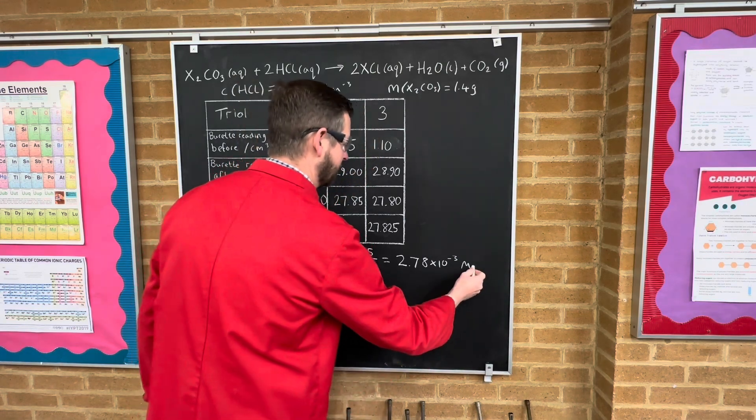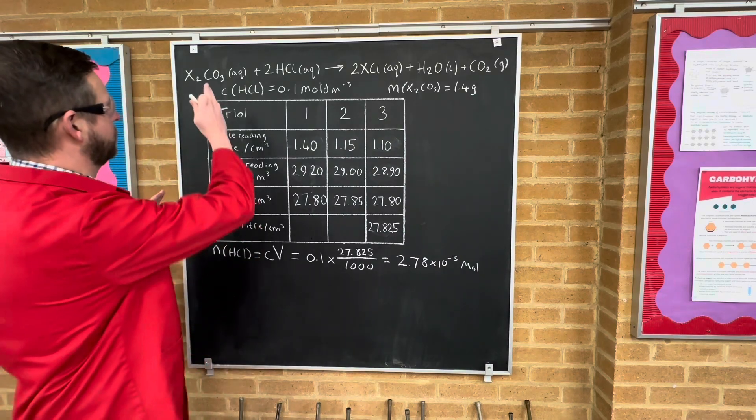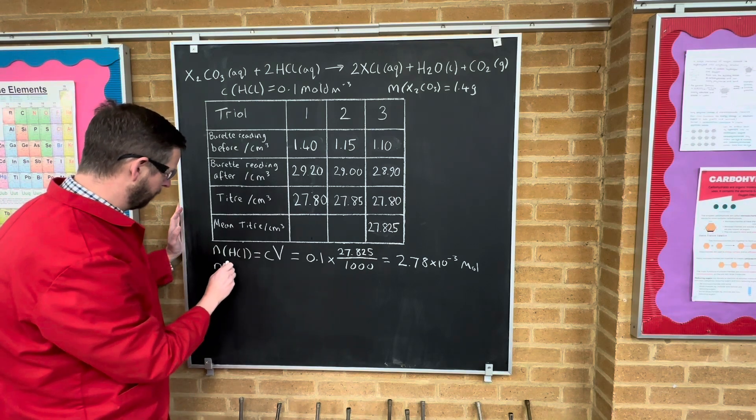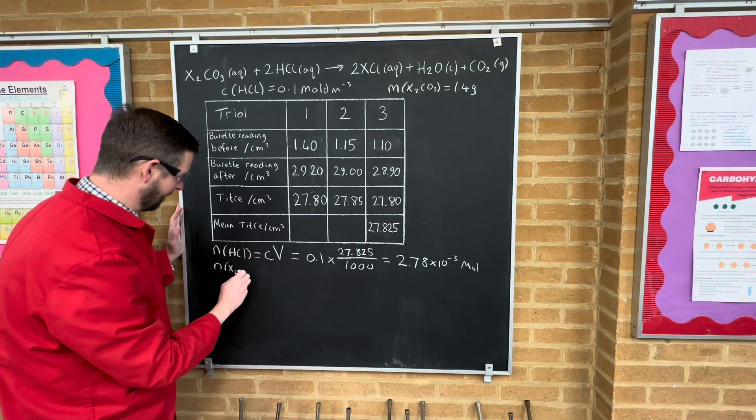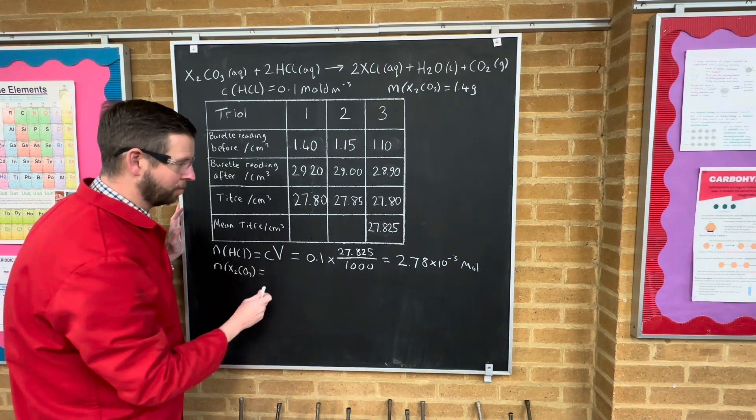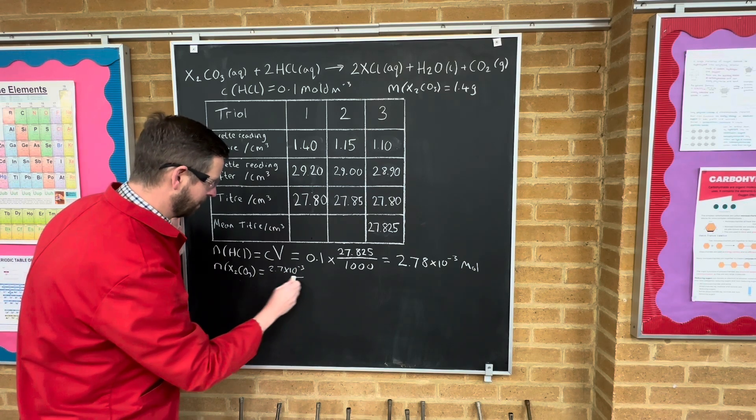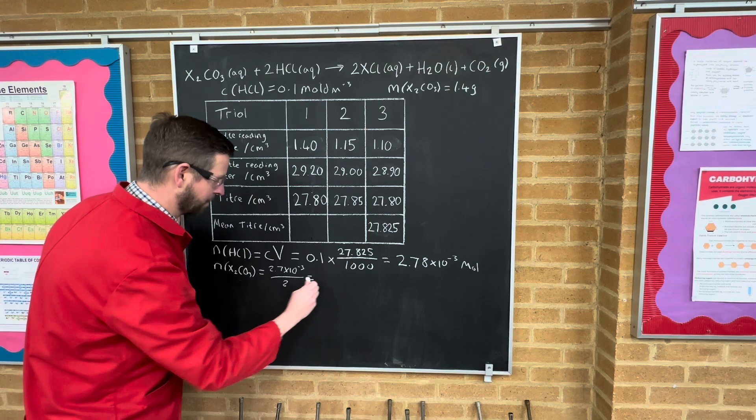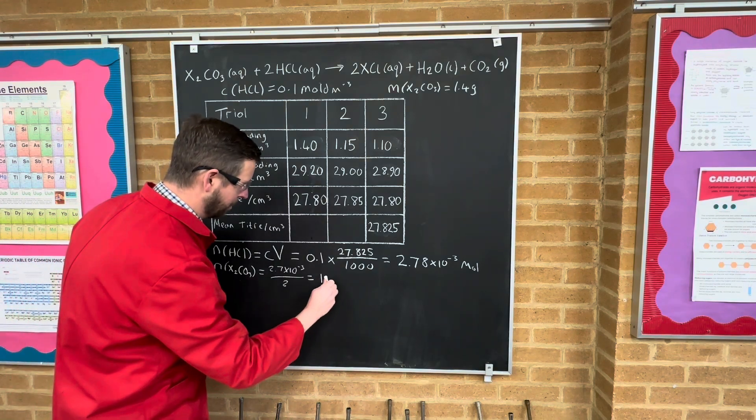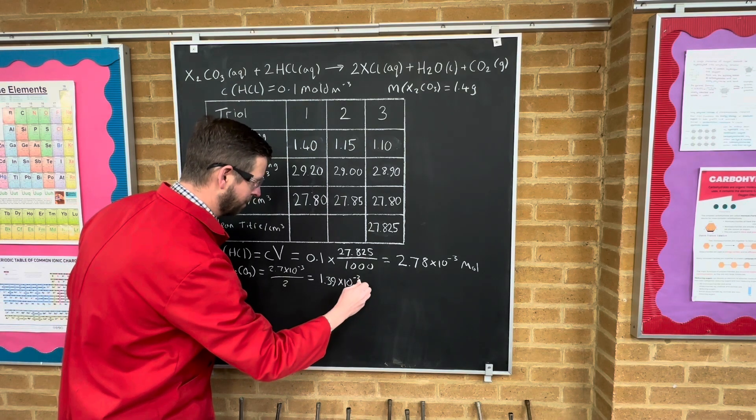So that is how many moles of hydrochloric acid. Now the moles ratio in this is 1 to 2. So we know that the number of moles of unknown carbonate in our analyte was half of this value. So it's going to be 2.7 times 10 to the minus 3 divided by 2. So the number of moles works out to be 1.39 times 10 to the minus 3 moles.